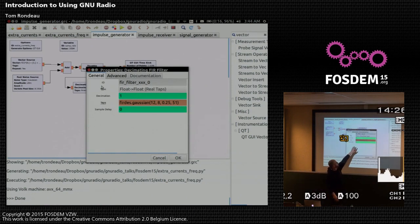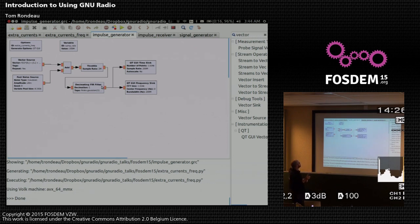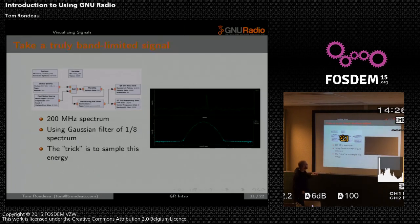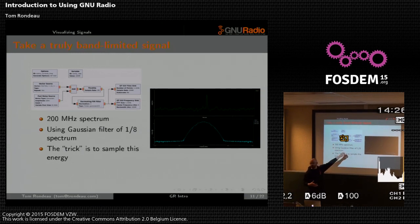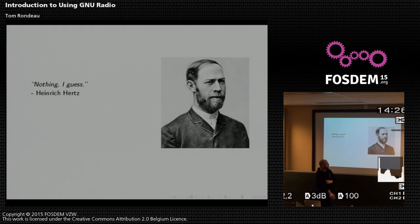I'll show an easy way to look at filter generation in a few minutes. We're experimenting here with a 200 MHz signal spectrum filtered by that Gaussian filter. The trick now is to sample this — how do we actually get this signal back? That's where Hertz comes in. He was really the motivation for this talk — to study how Hertz did his original experiments and how we can use them to study software radio.